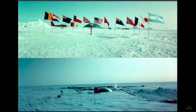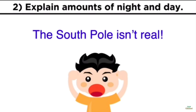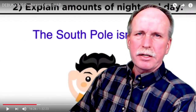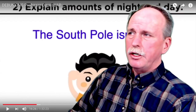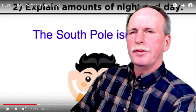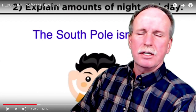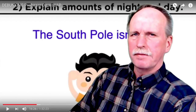The flat earth argues that their model is obliterated by the midnight sun, and they claim no one can go to Antarctica to verify it themselves because of the Antarctic Treaty. They say Antarctica is off limits, you can't travel there, it has armed guards around it. But what is the actual basis for this? The Antarctic Treaty.